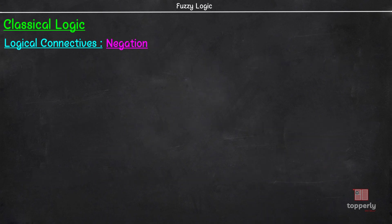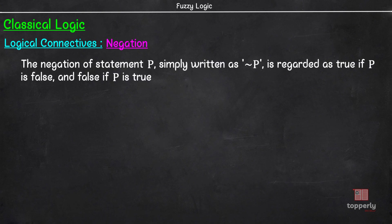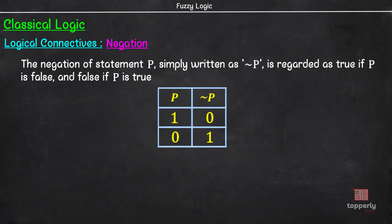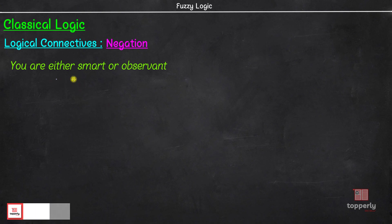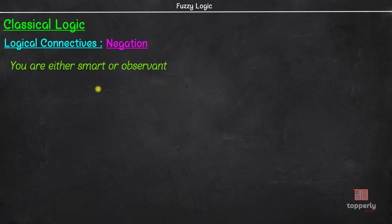Next, we have negation. The negation NOT P is true exactly when P is false and is written like this. Unlike other connectives we have learned, negation is applied to a single statement. Therefore, it has a much simpler truth table. In mathematics, it is important to determine what the opposite of a given mathematical statement is. So, let us take a look at some of the most common negations. As an example, consider the statement 'you are either smart or observant.' For this statement to be false, you can't be smart and you can't be observant. In other words, the opposite is to be not smart and not observant. So, the negation of this statement will be 'you are not smart and not observant.'